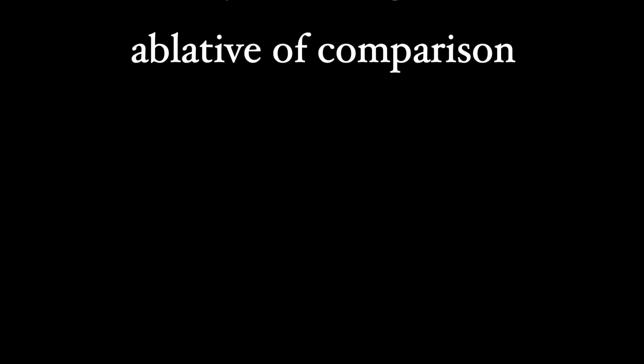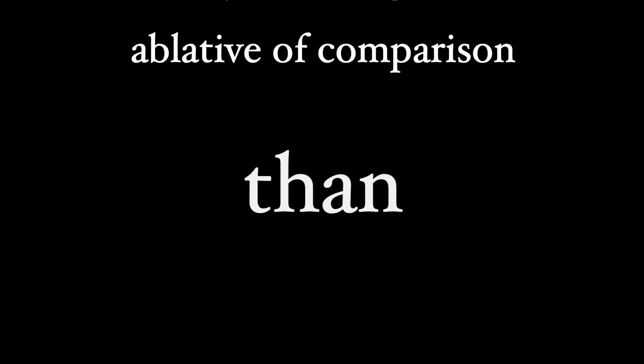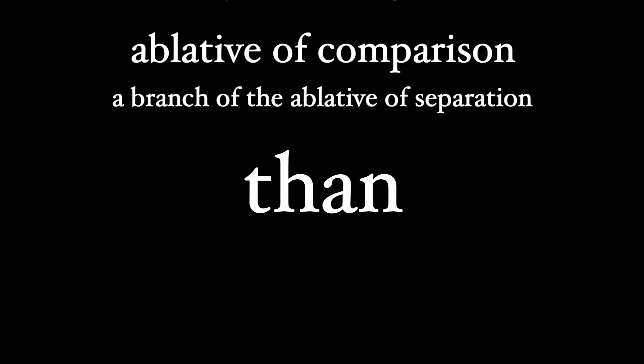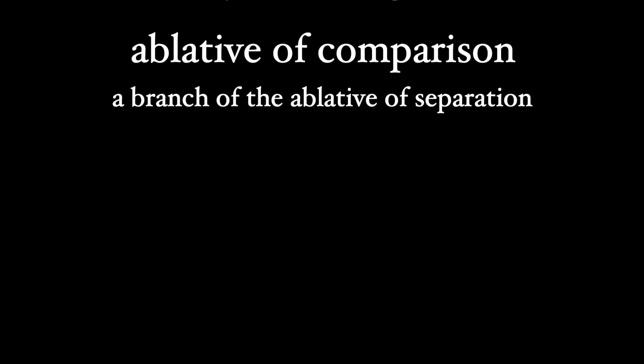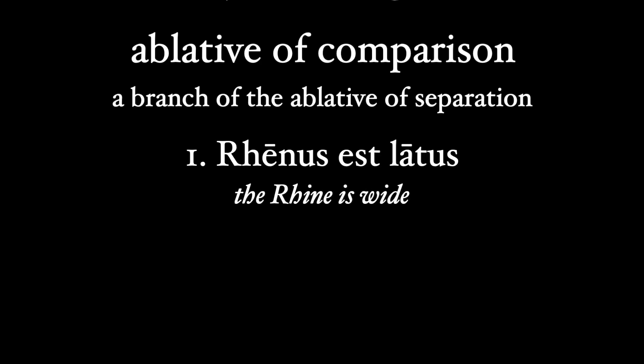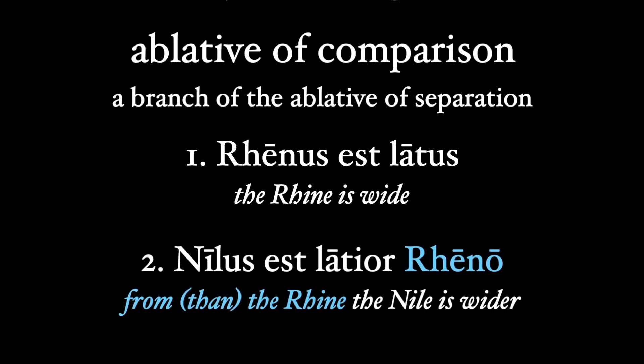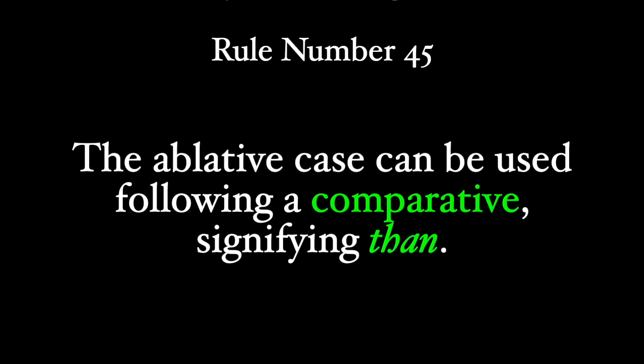You'll have noticed from this video that we translate the ablative of comparison with 'than', but it's really a branch of the ablative of separation — the 'from' use. There's an understood sequence of events with our comparison. Going back to our first statement, 'the Nile is wider than the Rhine': we have the first thought of 'Rhenus est latus' — the Rhine is wide — as our starting point. So when we get to our comparison, we're literally saying that starting from the Rhine, we go to the Nile, which is wider than it. This has been rule number 45: the ablative case can be used following a comparative, signifying 'than'.